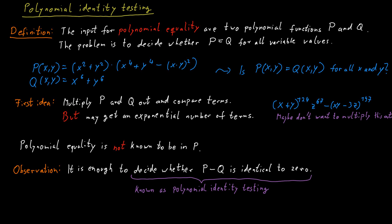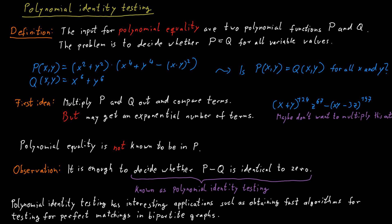Polynomial identity testing is also an interesting problem anyway, because it has surprising applications. For example, it can be used to come up with new algorithms for testing whether there is a perfect matching in a bipartite graph. I'm not getting into the details of this.